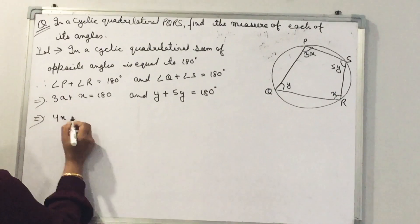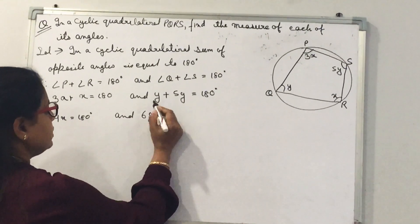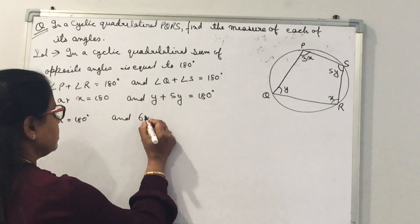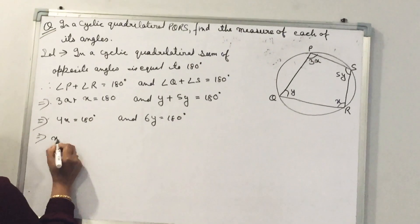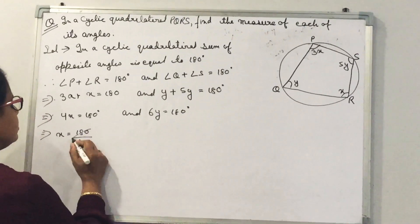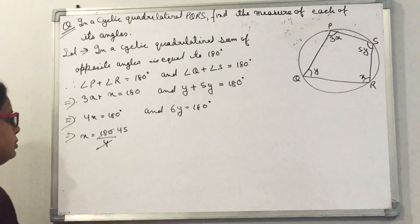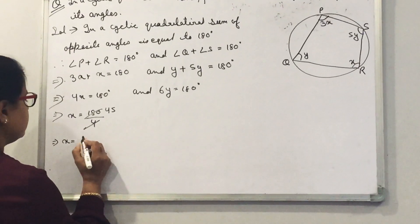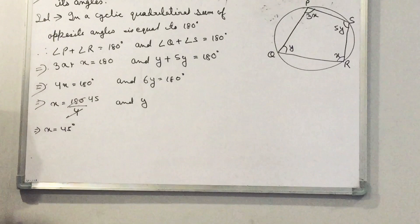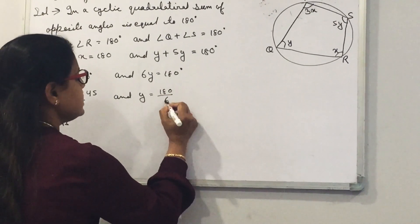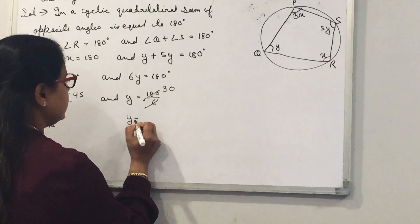This implies 4x is equal to 180 degrees, so x is equal to 45. And y plus 5y gives 6y equal to 180, so y is equal to 180 divided by 6, which means y is equal to 30.